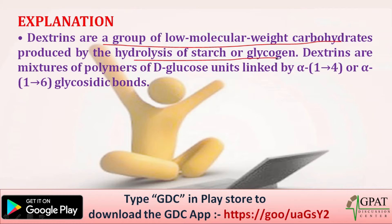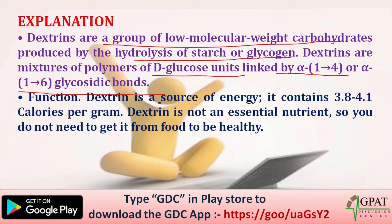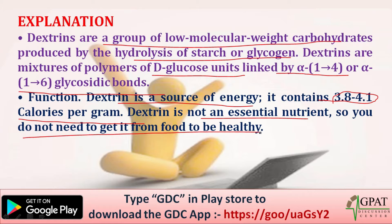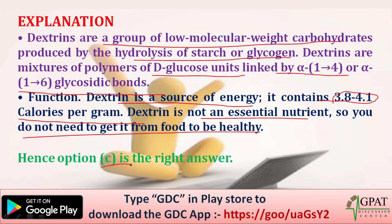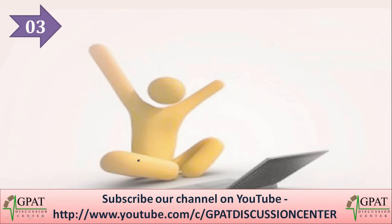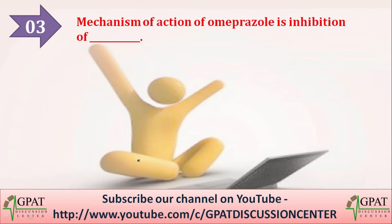Dextrins are a group of low molecular weight carbohydrates produced by the hydrolysis of starch or glycogen. Dextrins are mixtures of polymers of D-glucose units linked by alpha-1,4 or alpha-1,6 glycosidic bonds. Dextrin is a source of energy containing 3.8 to 4.1 calories per gram, but it is not an essential nutrient — you do not need to get it from food to be healthy. The correct answer is C, dextrin.